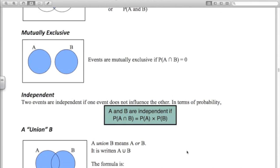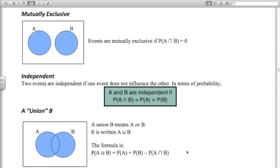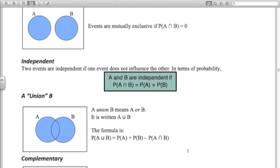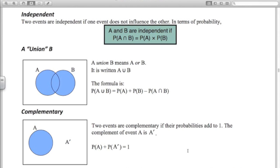The union of two events is one or the other, or both. So it's that shaded area there. A union B means A or B. It's written with a U in between them, which is good. And here's the formula, which I'm going to show you how it works later on. Complementary is another word that you need to know. The complement of an event is just the probability of the event not happening. So if event A was the event that it rains today, A dash would be the event that it doesn't rain today.